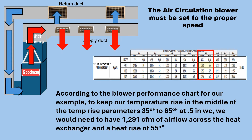According to the blower performance chart for our example, to keep our temperature rise in the middle of the temp rise parameters — 35 to 65 degrees — at 0.5 inches of water column, we would need 1,291 CFM of airflow across the heat exchanger and a heat rise of 55 degrees.